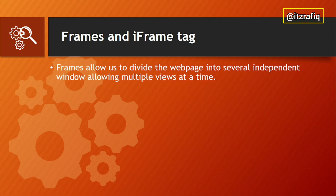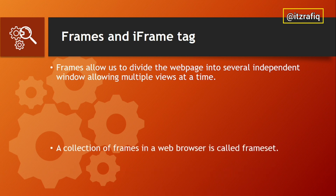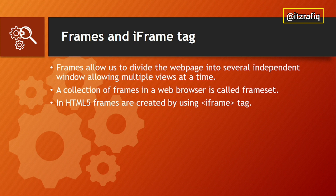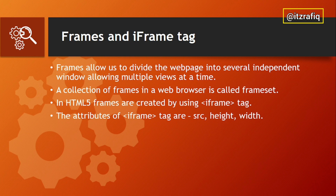Now, frames and iframes. The frames tag allows us to divide the web page into several independent windows, allowing multiple views at a time. When we need to display more than one content at the same time, we can use frames. For example, the top header of a website stays the same — we can keep that in a frame so we don't have to recreate the header again and again. A collection of frames in a browser is called a frameset, used in the older HTML4. In HTML5, framesets are not used; instead we use the iframe tag.